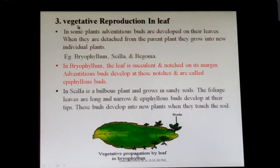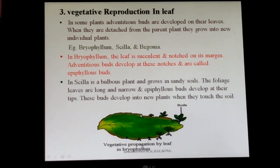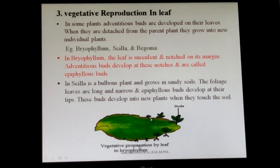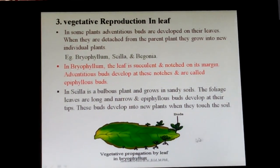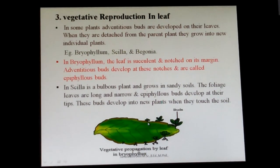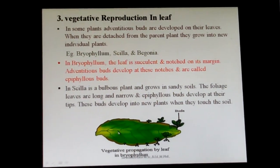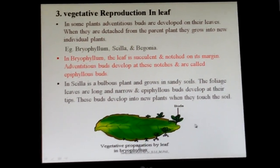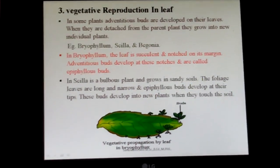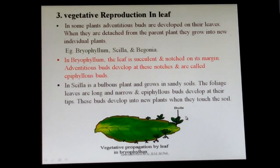The third type of vegetative reproduction in higher plants is through leaves. In leaves, adventitious buds are produced. Normally buds are produced in the axil or terminal of leaves, but here the buds are produced in the margin of the leaves — this is seen in Bryophyllum. The Bryophyllum leaf has notches at the margin of the leaf, and in these notches buds are produced. These buds are known as epiphyllous buds — 'epi' means outside, 'phyll' means leaf. When the leaf dries or detaches from the mother plant and touches the soil, it germinates, forms a root system, and develops into a new individual.